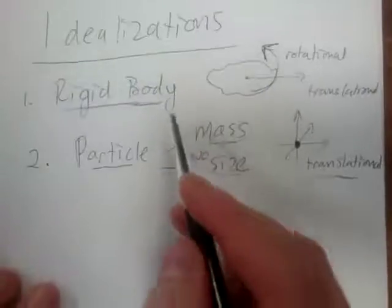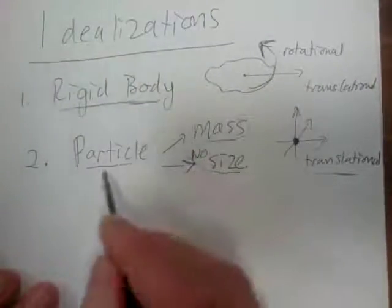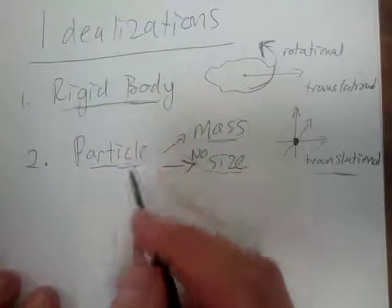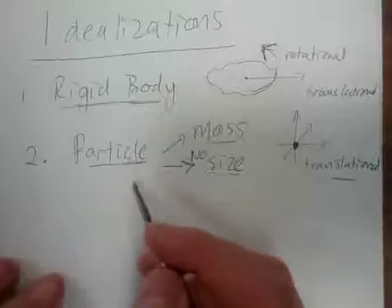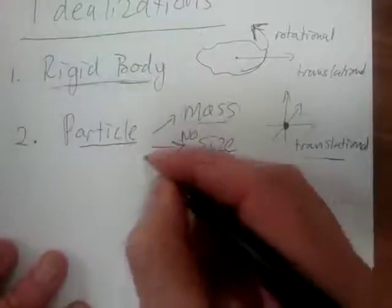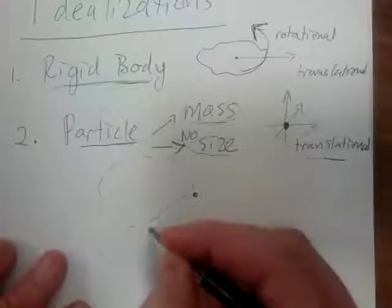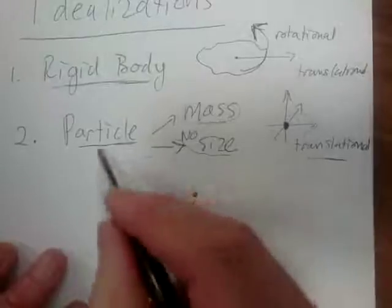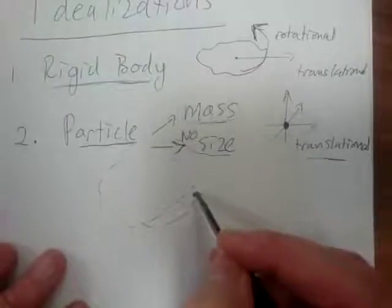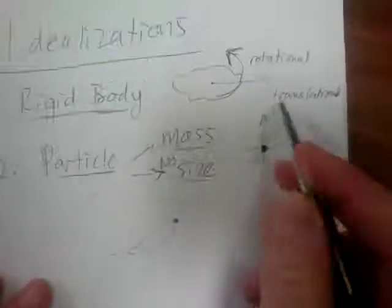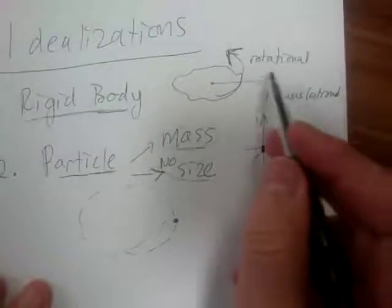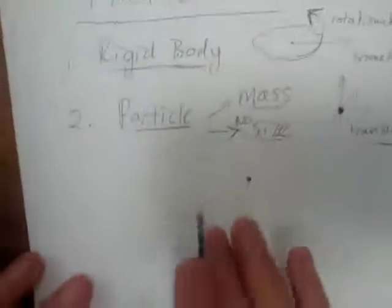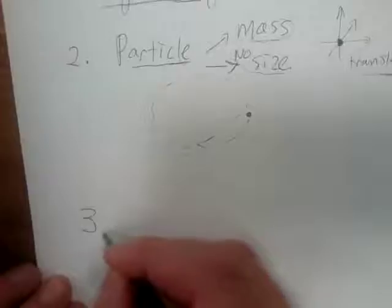A particle is an idealization: if the body is so small compared to its surroundings — like the Earth relative to its orbit — we treat it as a particle. We ignore its rotational properties and only consider translational motion. Please understand the key difference between a body and a particle.